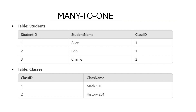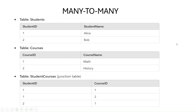Finally, we have the many-to-many relationship, where multiple records in table A can relate to multiple records in table B. Think of a students table and a courses table: a student can enroll in multiple courses and each course can have multiple students. To manage this, an intermediate table called the junction table — here named student_courses — is introduced. Each record in the junction table represents a student enrolled in a specific course.